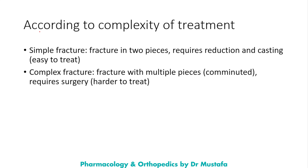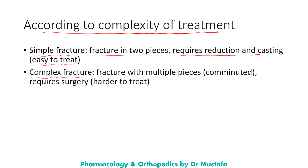Types of fractures according to complexity of treatment: we have simple fractures and complex fractures. Simple fractures are fractures in two pieces — closed fractures that require only reduction and casting, and are easy to treat. Complex fractures involve multiple pieces, are comminuted, require surgery, and are harder to treat.